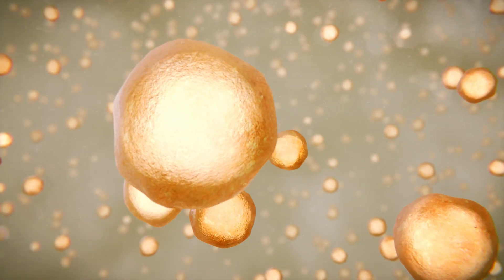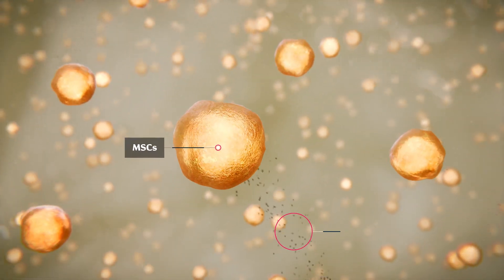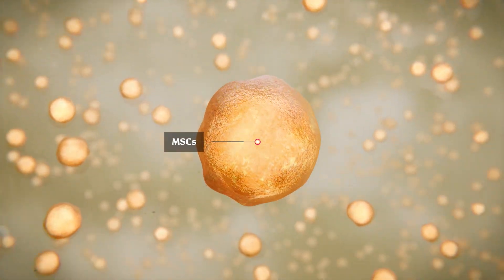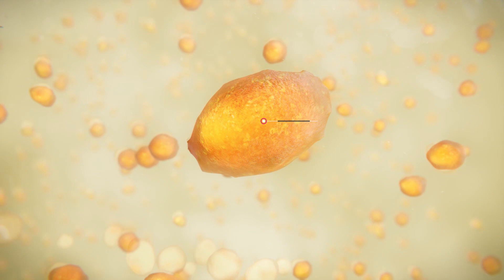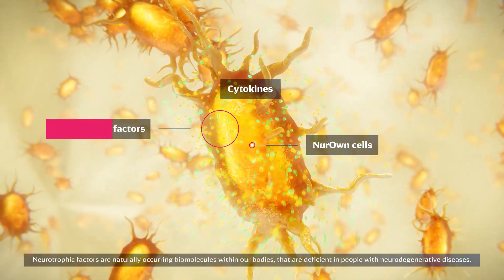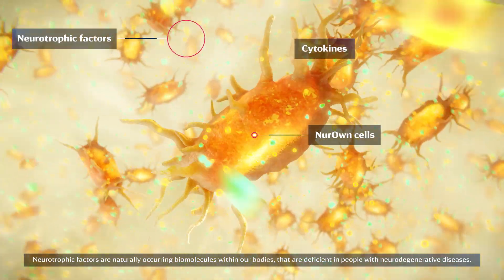The MSCs are grown in an FDA-approved cleanroom manufacturing facility using Brainstorm Cell Therapeutics' proprietary neuron technology to make them into neuron cells that release high levels of neurotrophic factors, which help nerve cells repair, grow and survive and reduce the production of inflammatory factors.